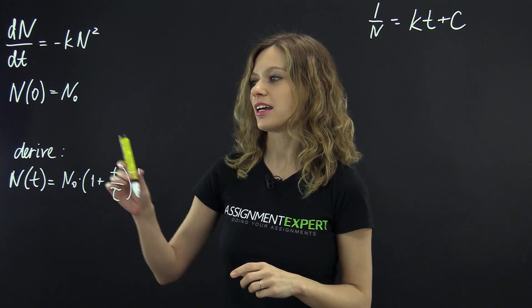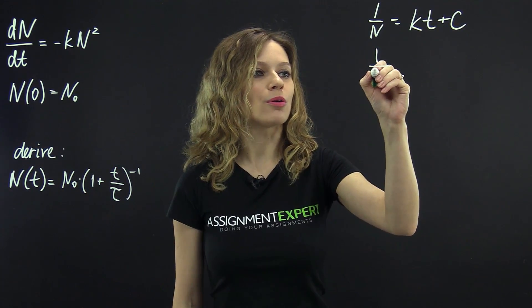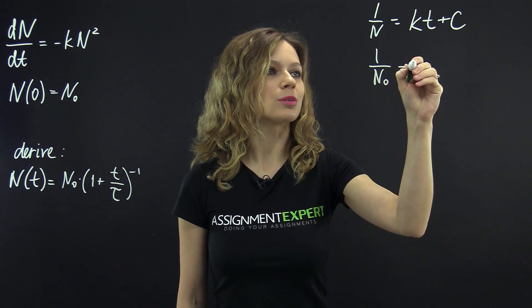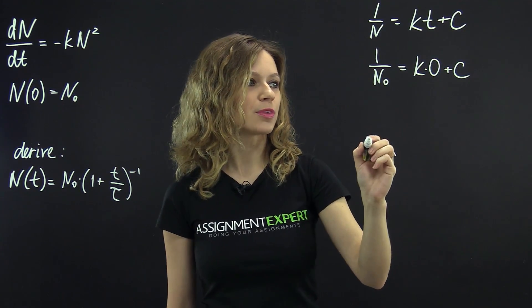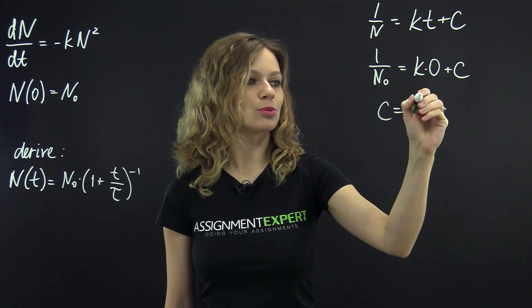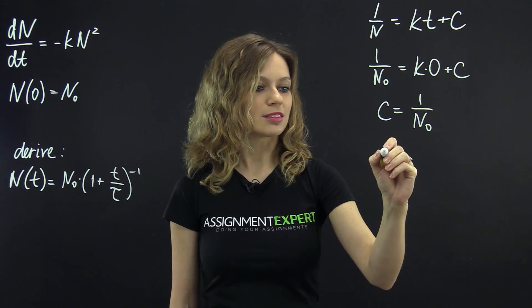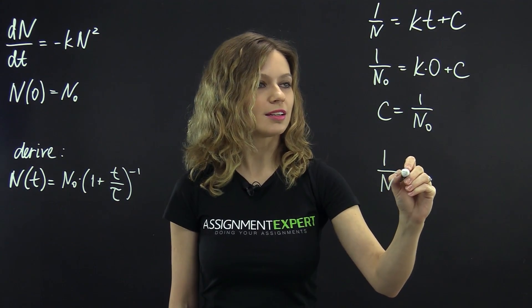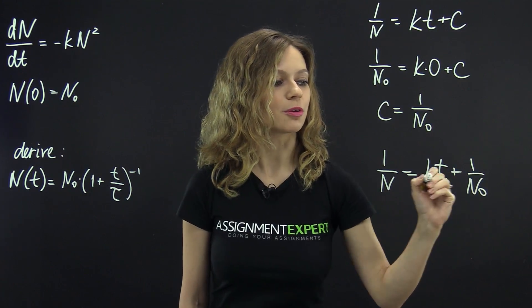So, we have that N of 0 equals N sub 0. Therefore, 1 over N sub 0 is equal to k times 0 plus c. And therefore, we have that c is equal to 1 over N sub 0. And our equation looks like this: 1 over N equals kt plus 1 over N sub 0.